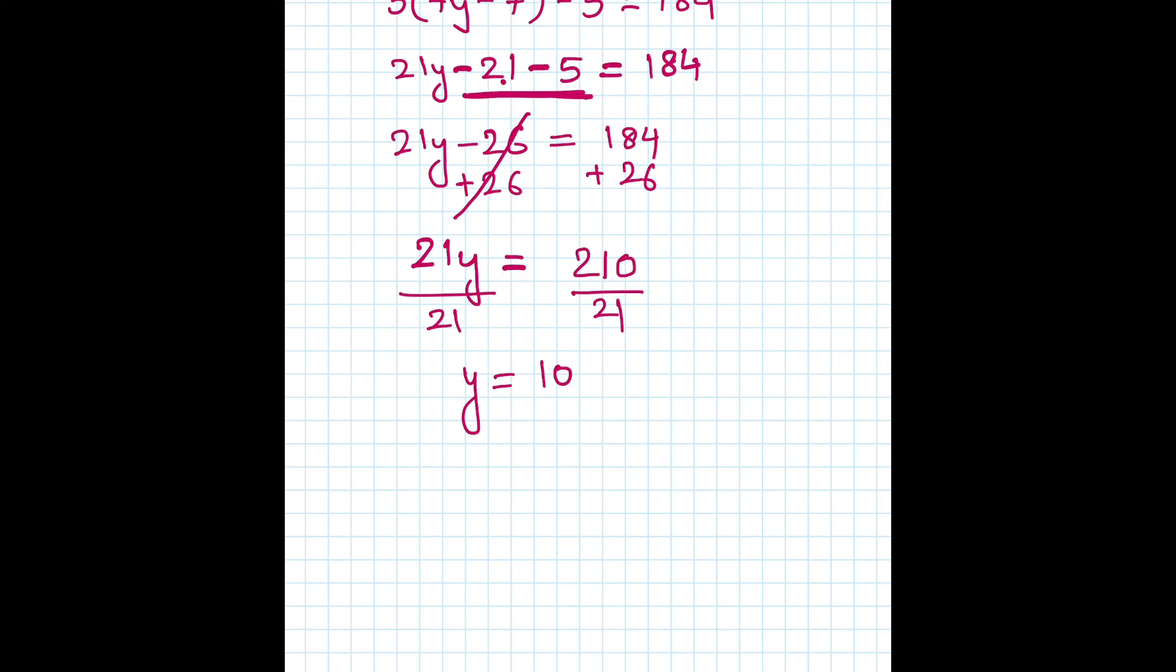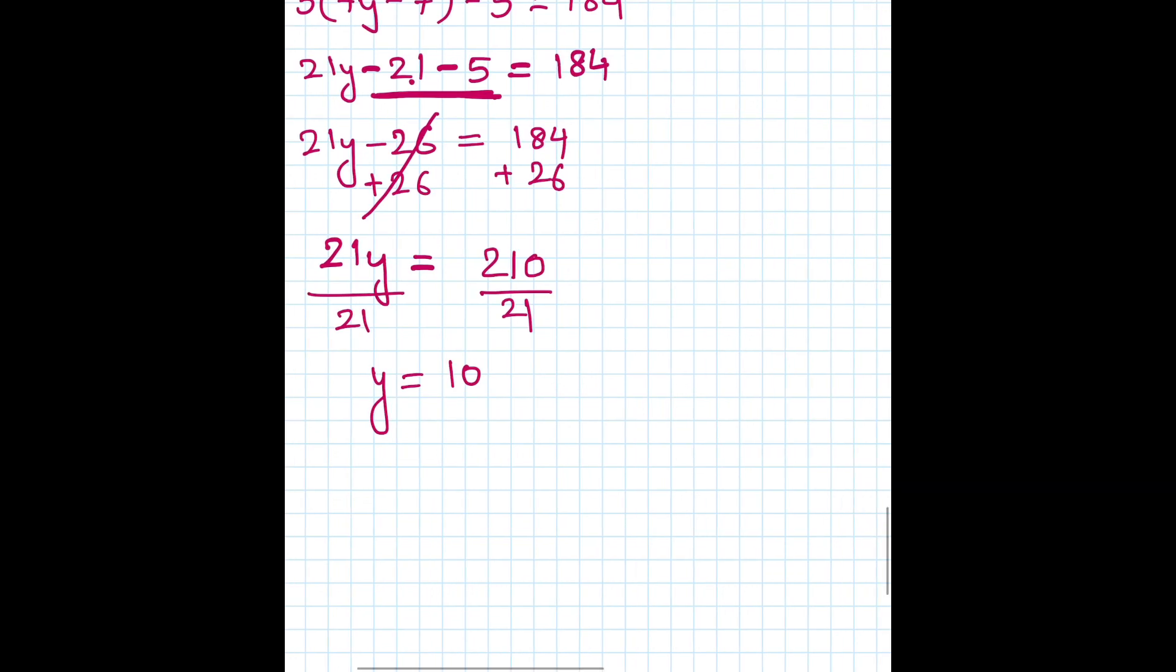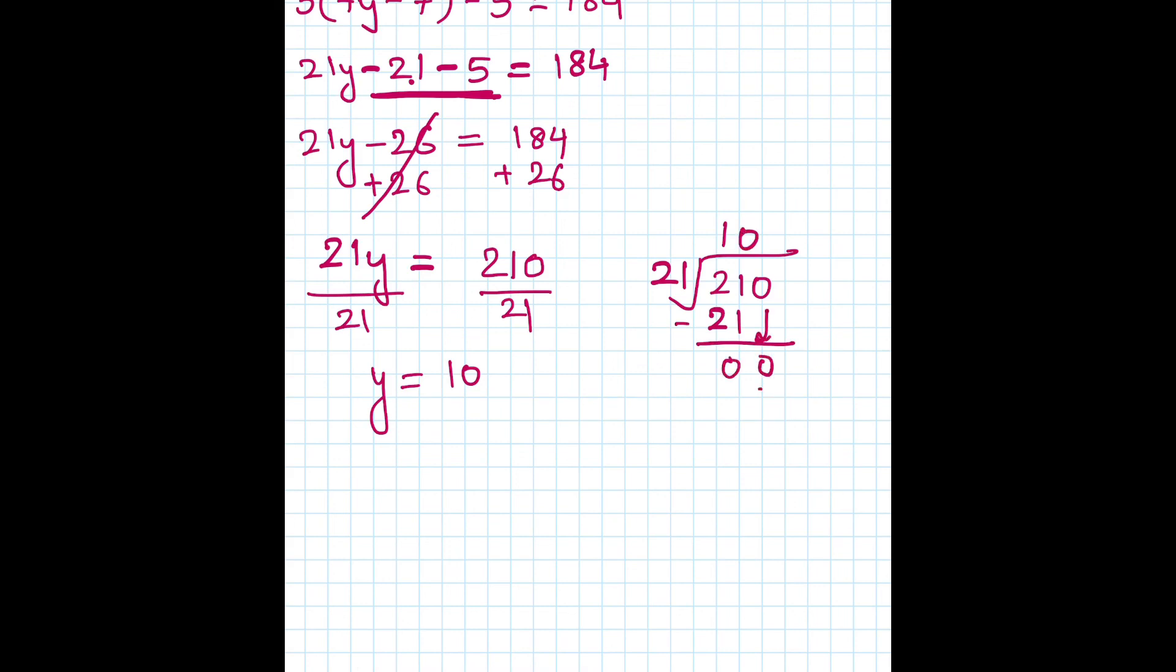Or you can do the long division again, you know how to do that. So 21 times 1 is 21, you're left with 0, you take away 0. 21 times 0 is 0, you're left with 0, so the answer is 10. Great, have a good day.